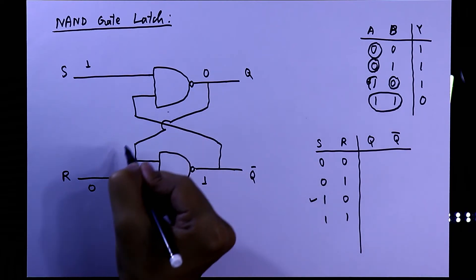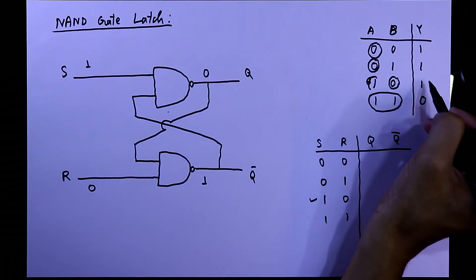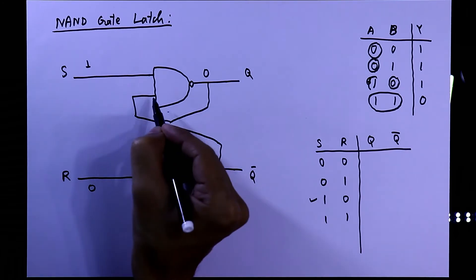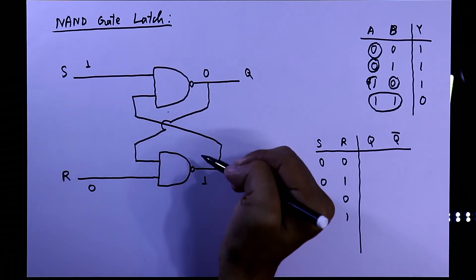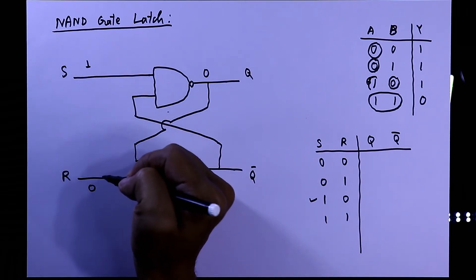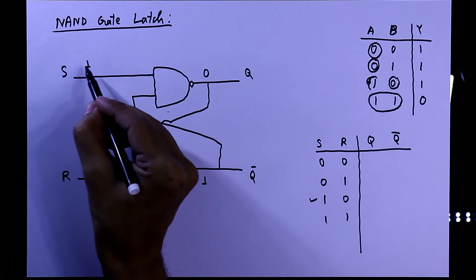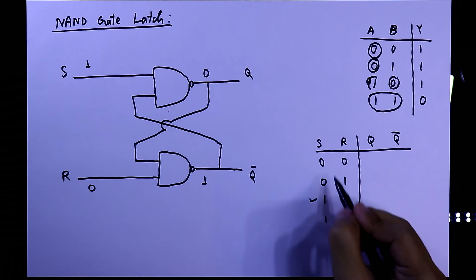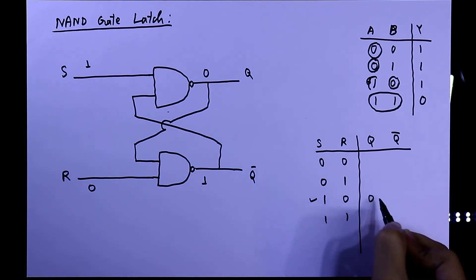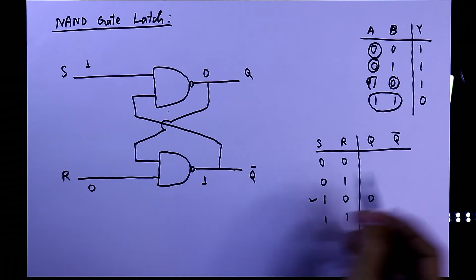This 1 connects to the second gate; with both inputs now 1, the output is 0. So when S=1 and R=0, we get Q=0 and Q-bar=1.